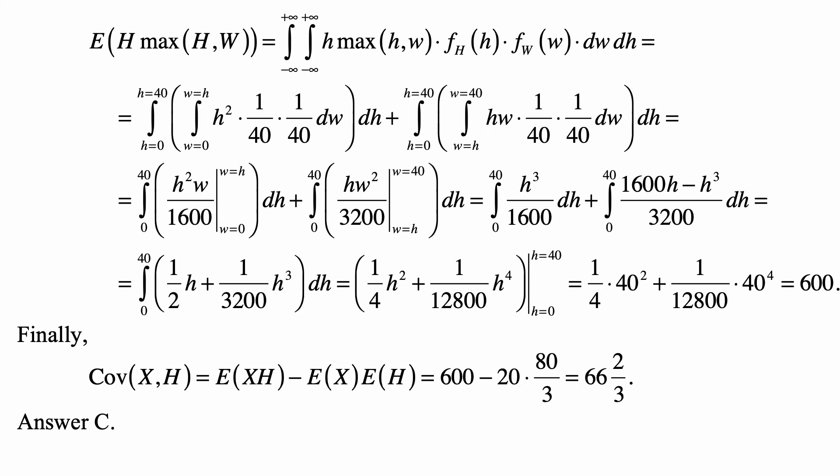We can actually combine the two. And this becomes the integral from 0 to 40 of 1 half h plus 1 over 3200 h cubed dh. That's one-fourth h squared plus 1 over 12,800 h to the fourth, evaluated from h equal to 0 to h equal to 40. That's one-fourth times 40 squared plus 1 over 12,800 times 40 to the fourth, and that ends up being equal to 600.